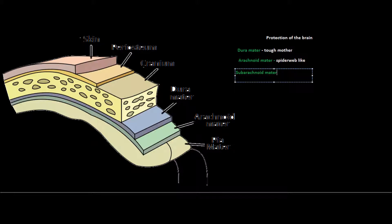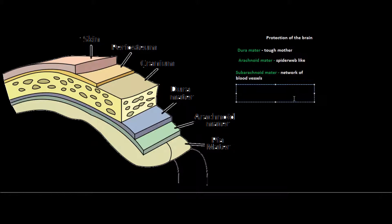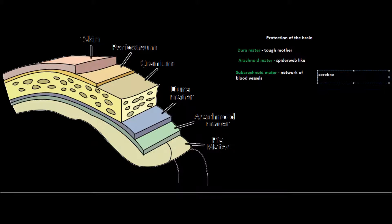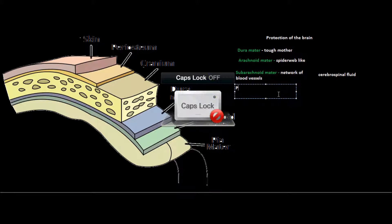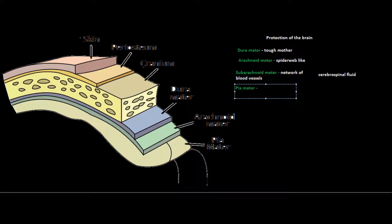Just beneath the arachnoid mater, within that little space, is what we call the subarachnoid space. This is where cerebrospinal fluid is contained, and it's also a network of blood vessels that help support the brain by supplying oxygenated blood. The cerebrospinal fluid present in the subarachnoid space is very important because it adds cushioning and softens the structure, ensuring the brain isn't exposed to hard contact with the outer layers such as the cranium and the dura mater.